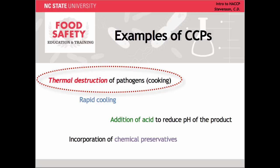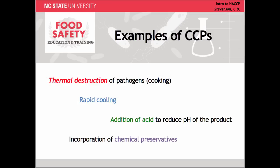Most pathogens will not grow appreciably at refrigerated temperatures below 5 degrees Celsius or above 57 degrees Celsius. This leaves a temperature danger zone which reaches from 41 degrees Fahrenheit to 135 degrees Fahrenheit. Food which is likely to support the rapid growth of pathogens should not be held within this range for more than a short time, usually defined as more than four hours. Therefore, rapid cooling of a cooked or processed food through this zone is important.